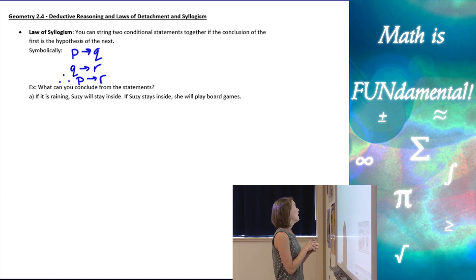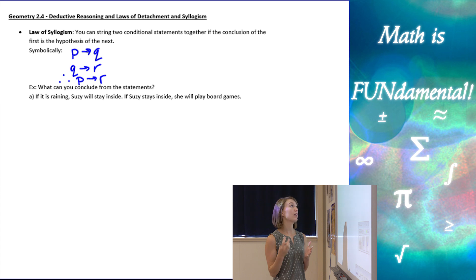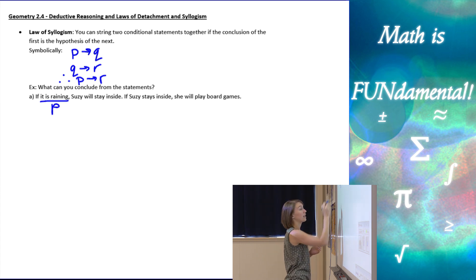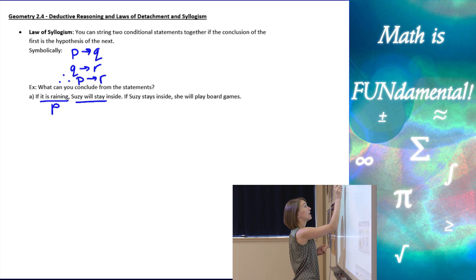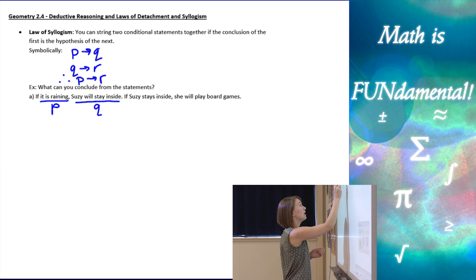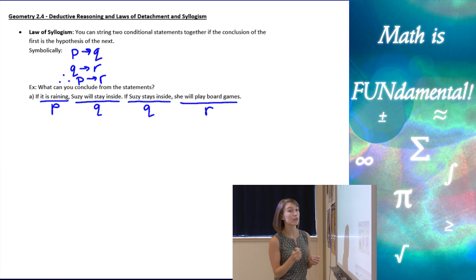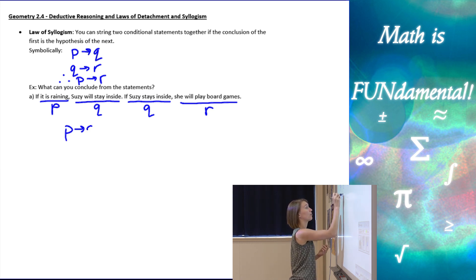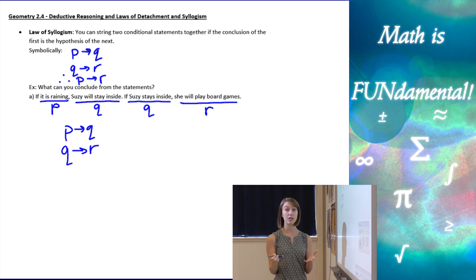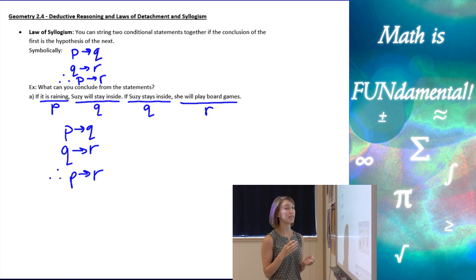Let's look at an example. If it is raining, Susie will stay inside. If Susie stays inside, she will play board games. We have three pieces of information: 'it is raining' is P, 'Susie will stay inside' is Q, and 'Susie stays inside' is repeated — that's still Q, not a new piece of information. 'She will play board games' is R. So I have P then Q, and then Q then R. This fits our law of syllogism, so my conclusion should be the conditional statement P then R.